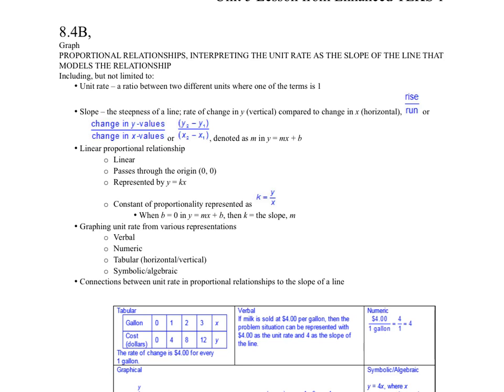Let's talk about the graphing component of proportional relationships. As we had mentioned prior, when we are looking at multiple representation, we are looking at a verbal, a numeric, a table, and an algebraic equation. And what we also want to do is connect between the unit rate in a proportional relationship to the slope of a line. In plain words, do they match up? Are they the same? Well, let's go ahead and take a look.